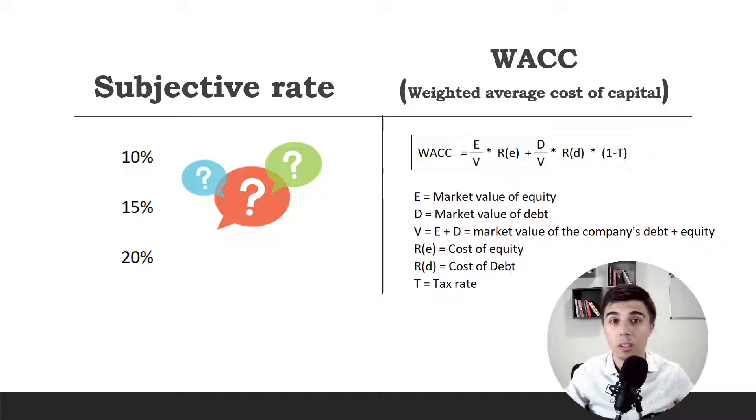If you're following this channel, then you know that I'm using the weighted average cost of capital because I want to get to the intrinsic value of the company. And if you have the question, well isn't that also the case with the subjective rate, I'd like to answer that question through an example.